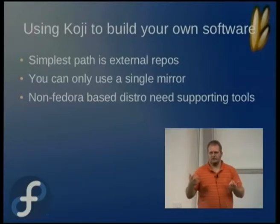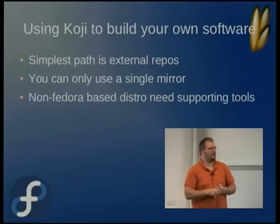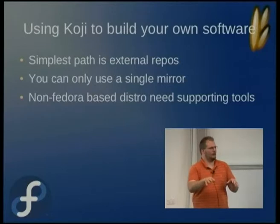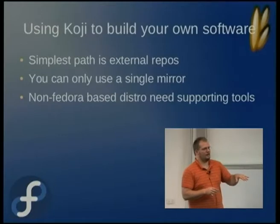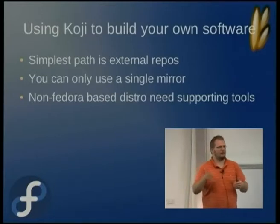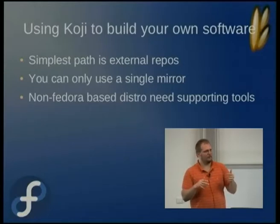For building your own software using Koji, the simplest path is to use external repositories. If you use internal repositories and want to build for Fedora 14 or RHEL, you need to import packages and continuously import updates to keep things current. Using external repositories, you can just point it at a mirror and whenever there's an update available it'll get picked up. You can only use a single mirror though — while Yum supports mirror lists, Koji can't use them; you have to point it at a single mirror.